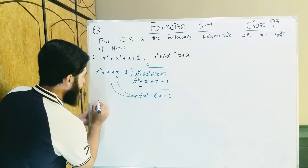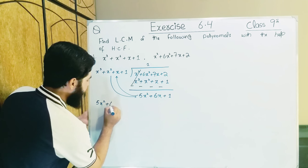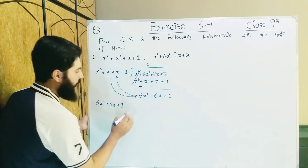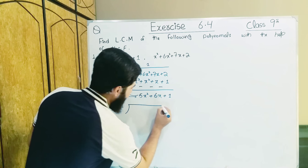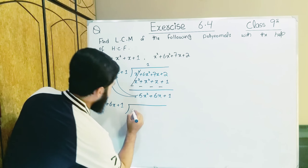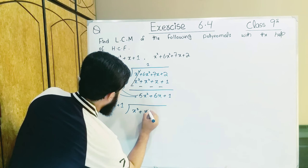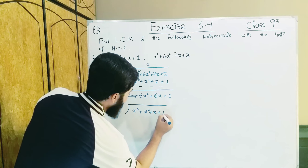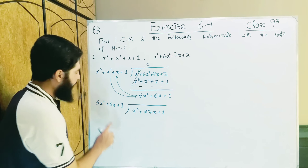The inside polynomial becomes: 5x² + 6x + 1. We take this outside. Now the outside value — x³ + x² + x + 1 — we bring inside. Now let's see what we have: 5x² inside and x³ outside.